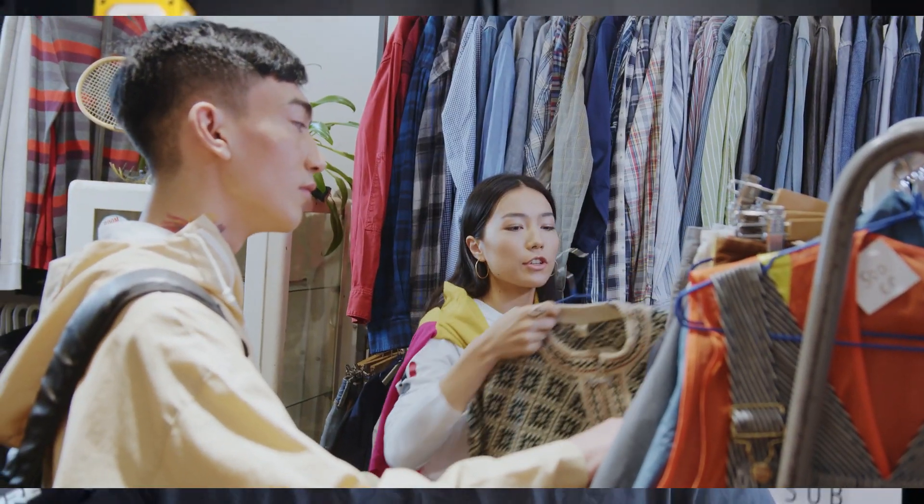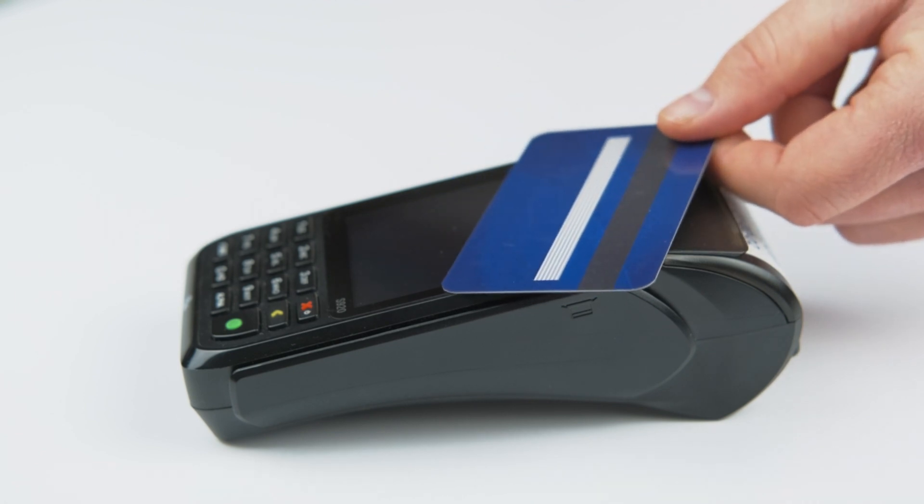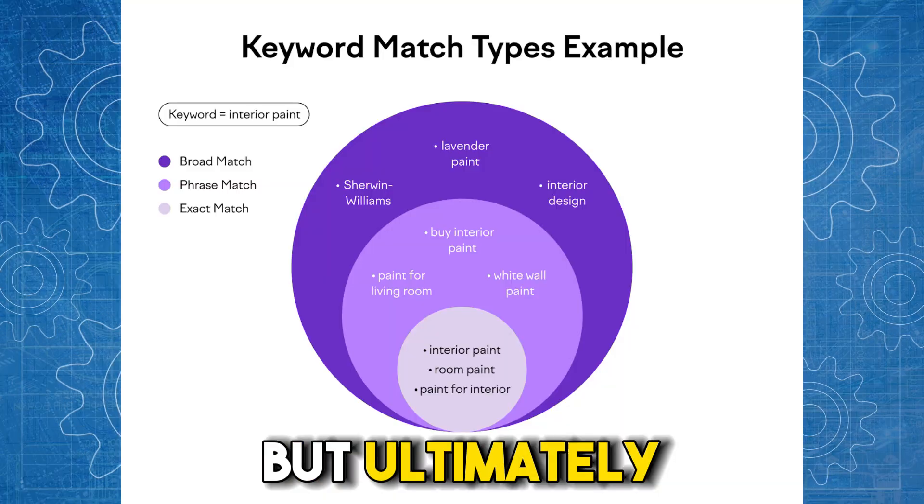Which keyword match type should you pick when you set up a brand new campaign? That depends on a number of factors including the niche or industry you're in, the CPCs, and your budget. If you're in a very high volume niche — for example the credit card niche selling credit cards to the general consumer public where basically any adult could be your customer — that's a massive audience. This kind of campaign could be a candidate for broad match because of the sheer size, scale of opportunity, and sheer number of conversions that could go through that account.